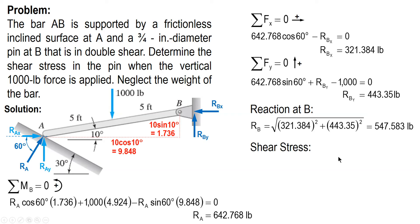Solving for the shear stress, remember, the pin at B is in double shear. So the area will be multiplied by 2. The area of the pin is multiplied by 2. Force over area times pi over 4 diameter squared. So the shear stress is equal to 619.74 psi.